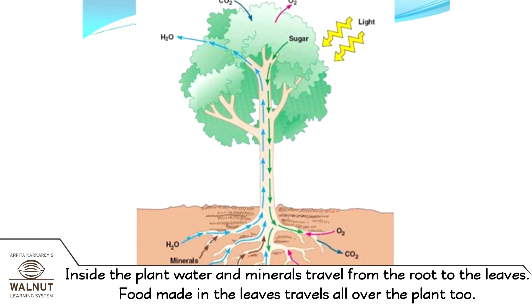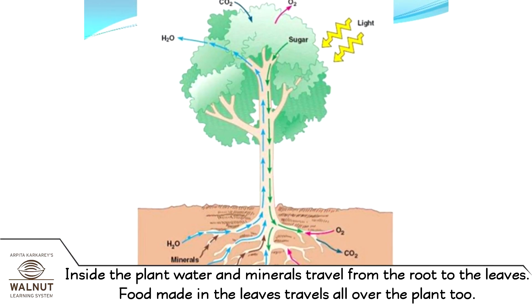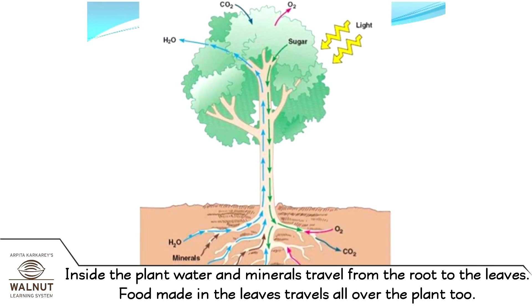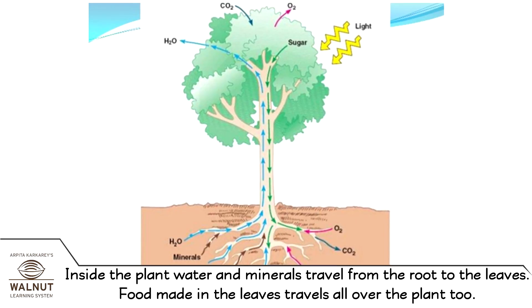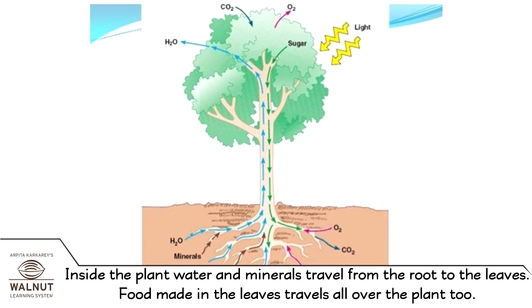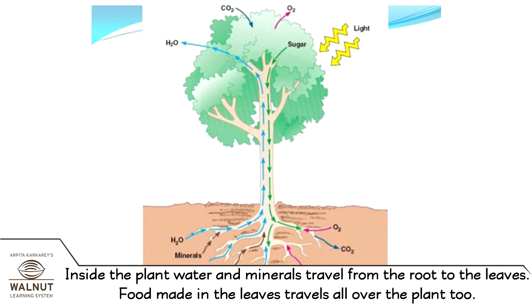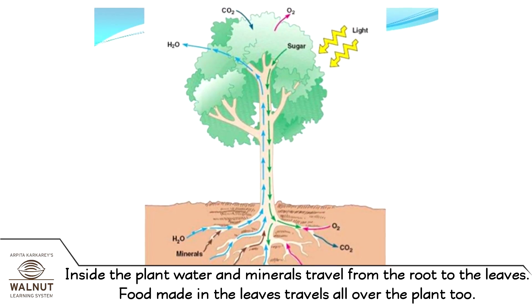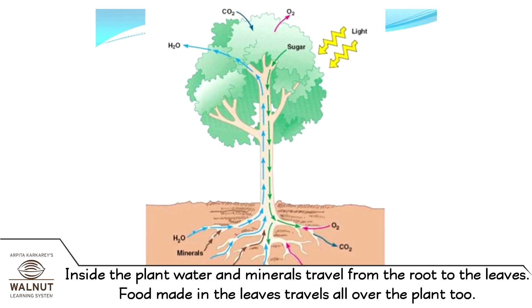Inside the plant, water and minerals travel from the roots to the leaves. Food made in the leaves travels all over the plant too.